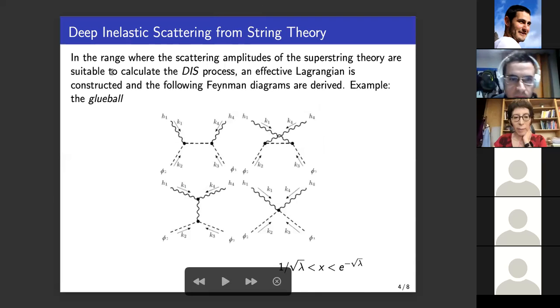Next. Okay, now in the range where the scattering amplitudes of superstring theory are suitable to calculate the DIS process, an effective Lagrangian is constructed and the following Feynman diagrams are derived. For example, in the case of gluons, we have the s-channel, the u-channel, t-channel, and the contact diagram. In the s-channel, for example, we have the wavy lines are the gravitons and the dashed lines are the dilatons.